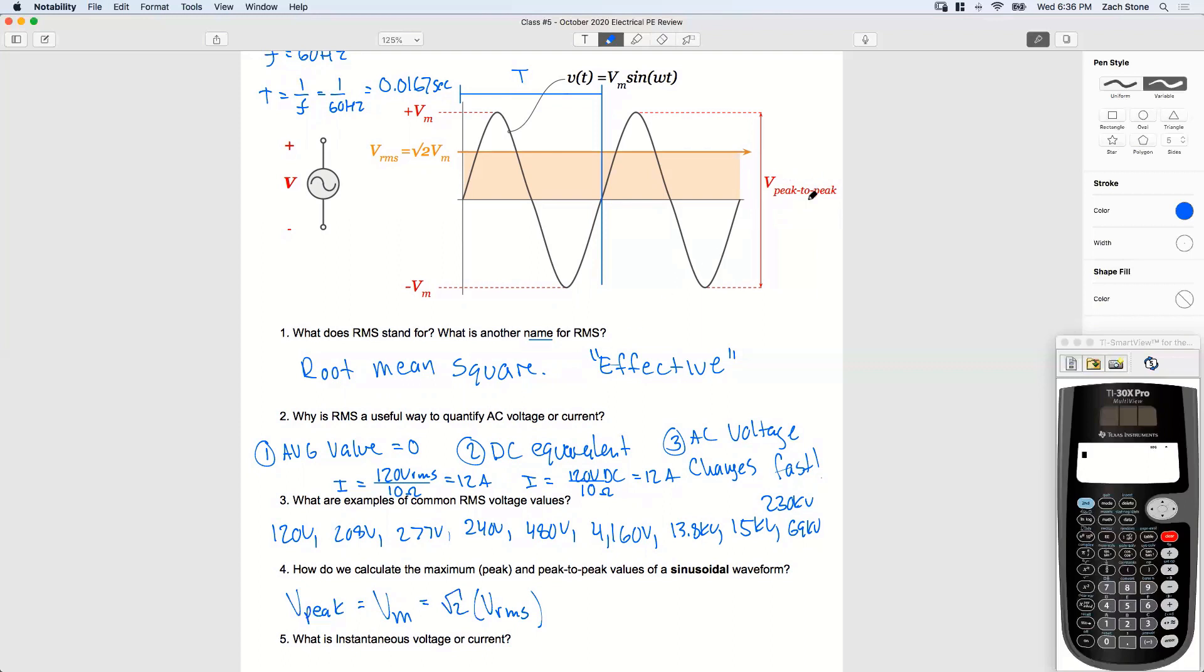What about the peak to peak value? If the max value is from here to here, and my negative max value is the same amount but in the negative direction, how do I calculate from the positive peak all the way down to the negative peak? Yeah, I just multiply the peak by two. So my peak to peak voltage is going to be two times the maximum value. If this is positive VM and this is negative VM, two times VM gives us that whole value from top to bottom.